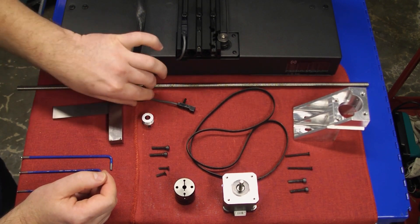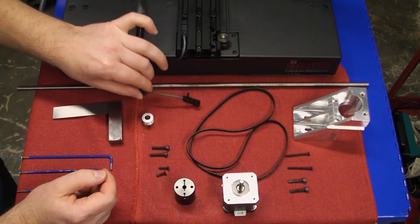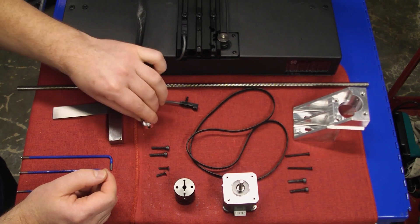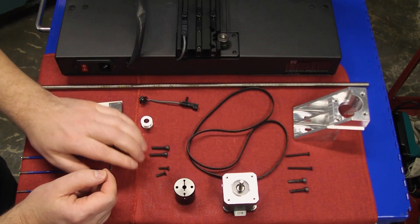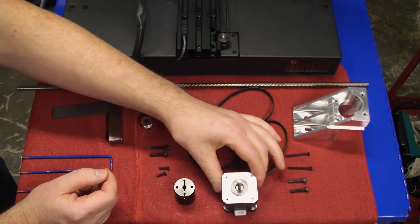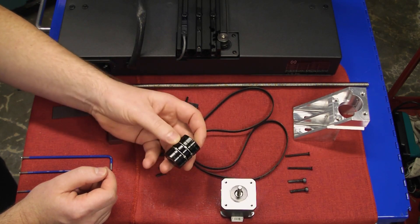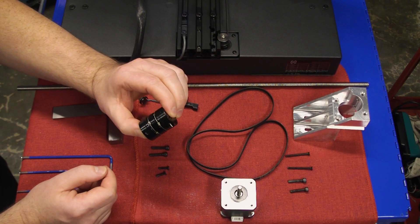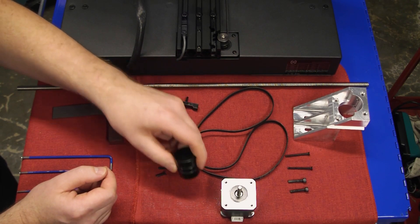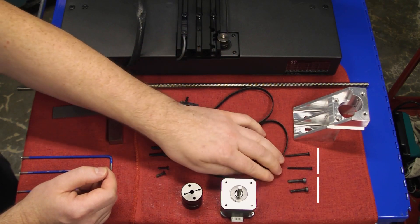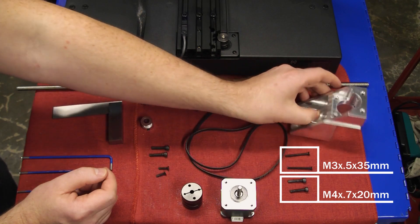The lead screw, the end stop sensor with its fastener, the belt pulley, the belt, the four original fasteners, the stepper motor, and the coupler. I've opted for an upgraded coupler. That's not necessary for this modification. Additionally, you will need four more screws and the new bracket.